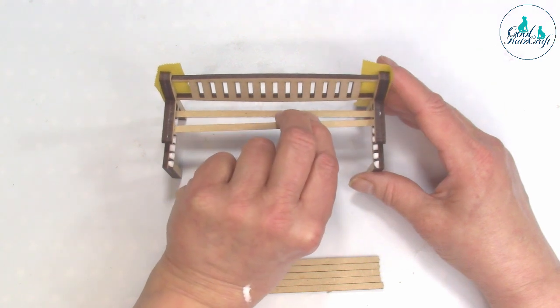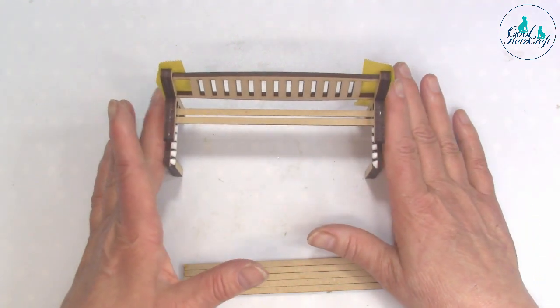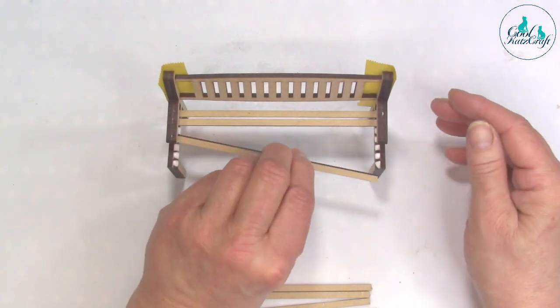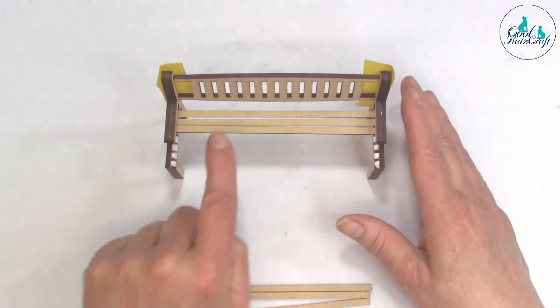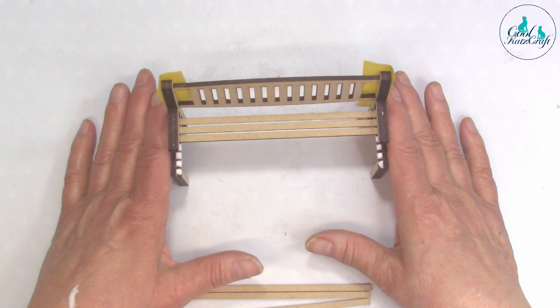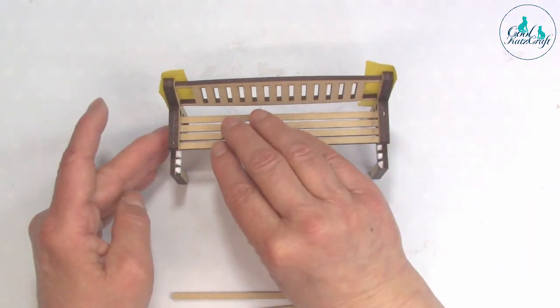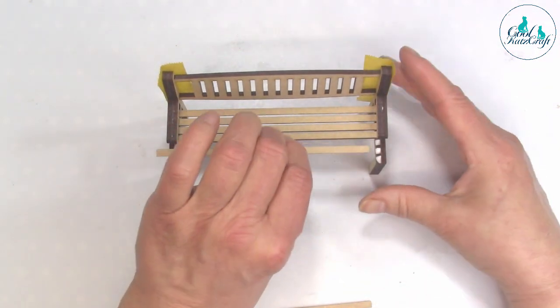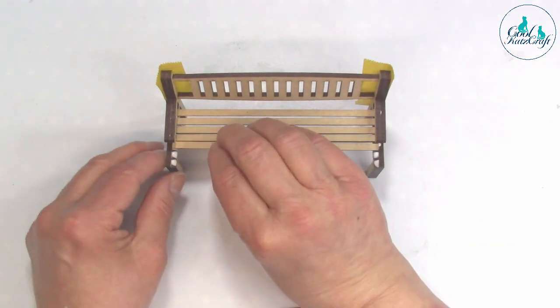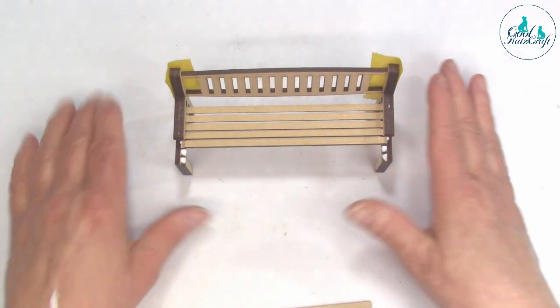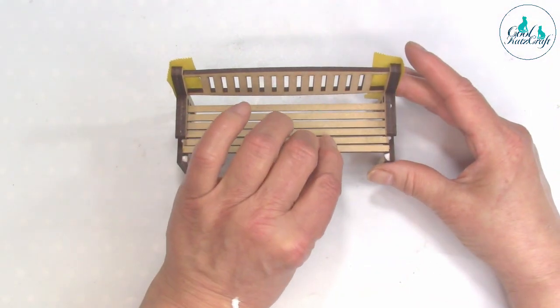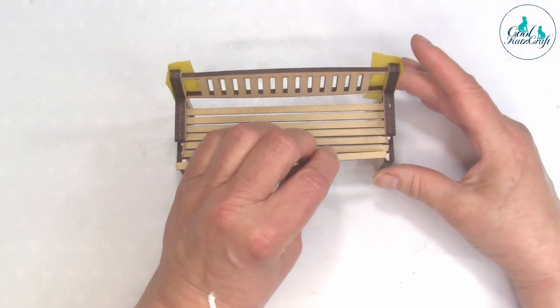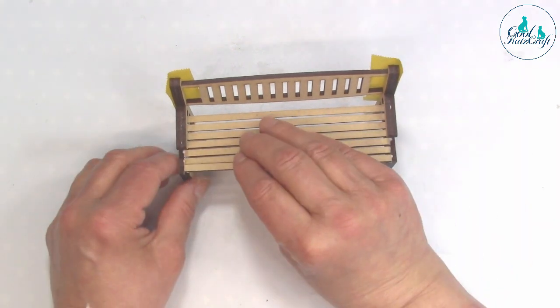Keep pushing it in because it has a tendency to bow that way and you want to keep it nice and square. Just push that in and it slots in. Keep going until the last one just fits in like that.